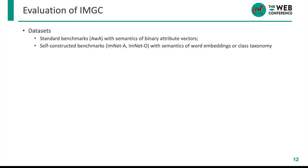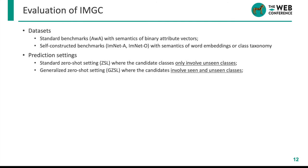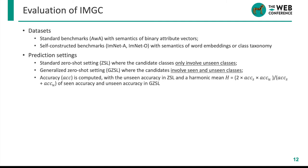We evaluate the zero-shot image classification task on three datasets: a standard benchmark AWA and two datasets extracted from ImageNet. We study two settings during prediction: one is standard ZSL, which classifies testing samples of unseen classes with candidates from the unseen class set; the other is generalized ZSL, where both seen and unseen testing samples are classified. In standard ZSL, class-averaged accuracy for all unseen classes is computed; in generalized ZSL, we compute accuracy for seen and unseen classes separately and calculate the harmonic mean.